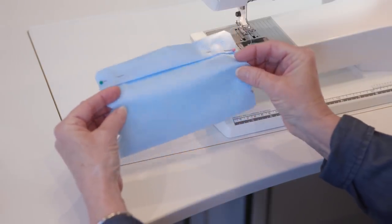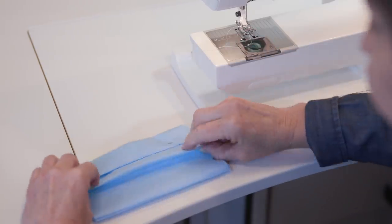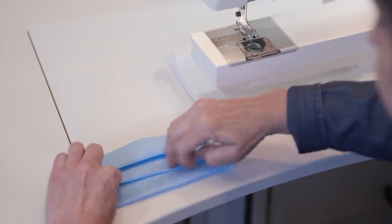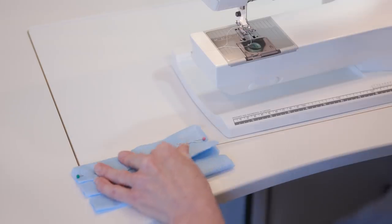Make a fold along line four. Place that folded edge on line six. This makes another downward facing pleat. Crease the folded edge so it lays flat. Pin the pleat in place.